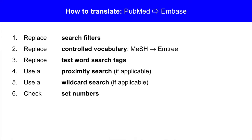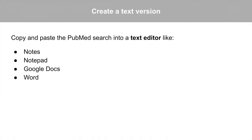Replace search filters. Replace controlled vocabulary, exchanging MeSH terms with mTree terms. Replace text word search tags. Use a proximity search if applicable. Use a wildcard search if applicable. And finally, check the set numbers. Begin by creating a text version of the strategy, which will be easier to edit. Copy and paste the PubMed search into a text editor like one of these.